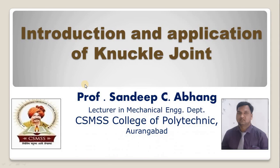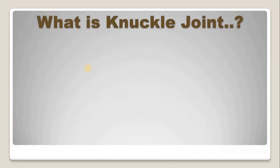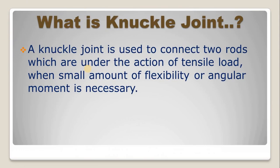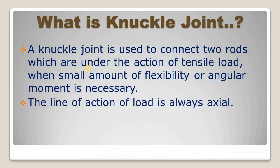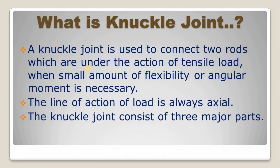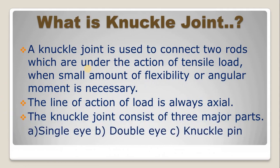Today we are learning about the introduction and application of knuckle joint. The knuckle joint is used to connect two rods which are under the action of tensile load when a small amount of flexibility or angular movement is necessary. The line of action of load is always axial. The knuckle joint consists of three major parts: single eye, double eye, and knuckle pin.